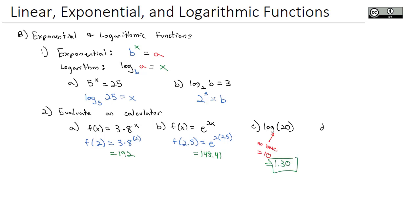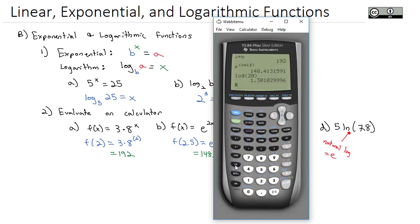Let's do 5 times the natural log of 7.8. When I see ln with no base written, ln stands for natural log, which means the base is e. On the calculator, there's an ln button, so we can do 5 ln of 7.8. The solution is 10.27.